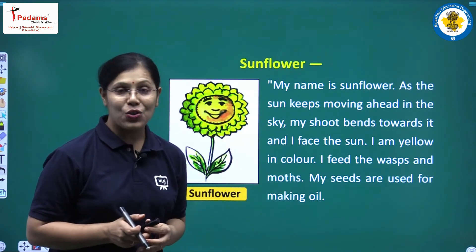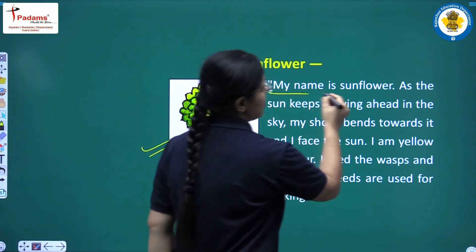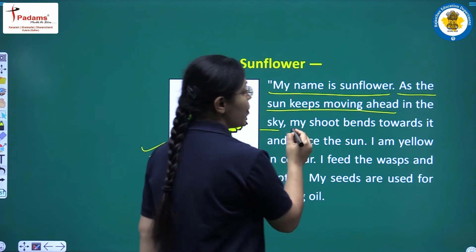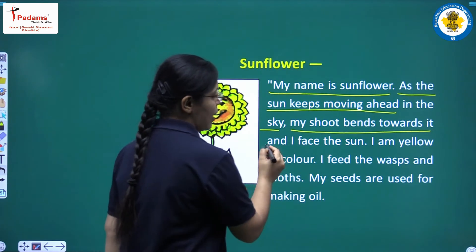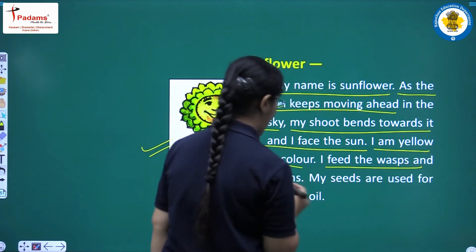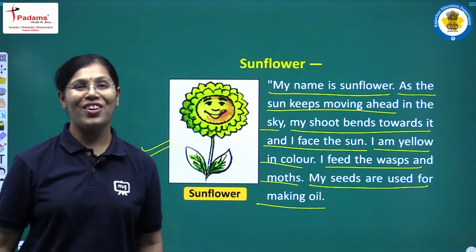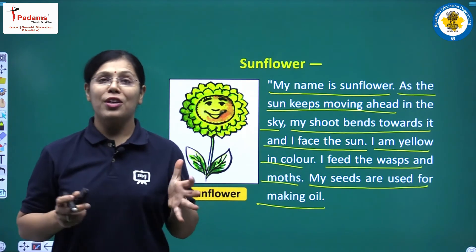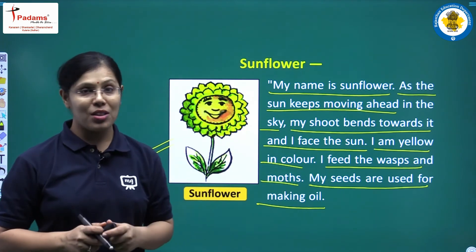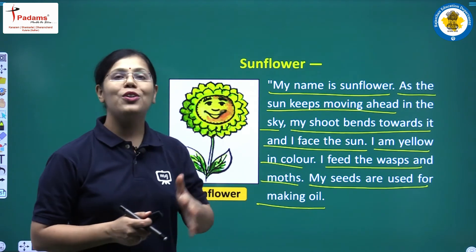The yellow flowers were actually sunflowers. Sunflower replied: My name is sunflower. As the sun keeps moving ahead in the sky, my shoot bends towards it and I face the sun. I am yellow in colour. I feed the wasps and moths. My seeds are used for making oil. This was the introduction of the sunflower.